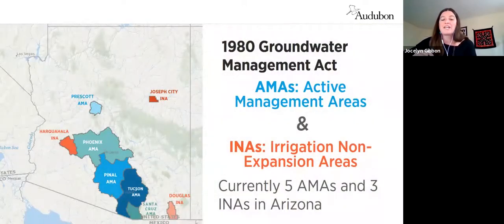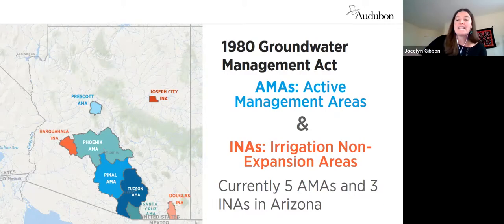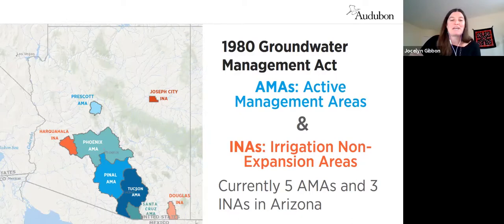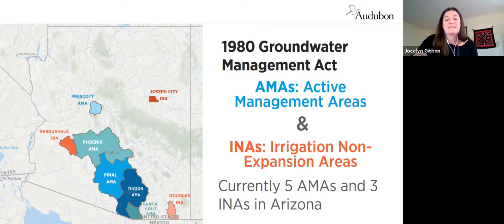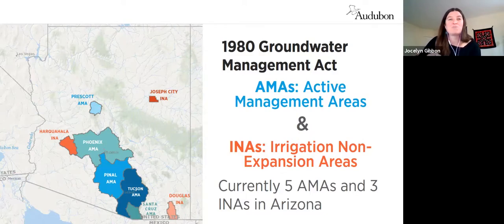The Act created two types of special groundwater management areas: AMAs, or Active Management Areas, and INAs, Irrigation Non-Expansion Areas. There are currently five AMAs and three INAs in the state, and the law also defines a process for creating new ones. In AMAs and INAs there are additional requirements related to groundwater use beyond just reasonable use.